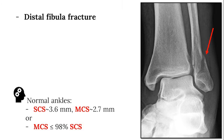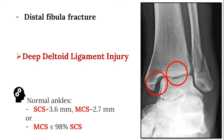This x-ray demonstrates a fracture of the distal fibula. However, examining the medial clear space, it is wider than the superior clear space, suggestive of a deep deltoid ligament injury.